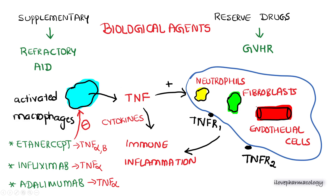Whenever macrophages are activated, they release tumor necrosis factor alpha. This TNF will combine with TNF receptor 1 as well as receptor 2, located on the surface of neutrophils, fibroblasts, and endothelial cells. Following activation, these cells mediate immune inflammation, and cytokines also help in immune-mediated inflammatory reactions. This TNF-alpha-induced immune inflammation can be inhibited by TNF-alpha inhibitors.